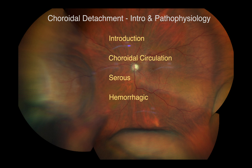Regarding hemorrhagic choroidal detachment, these usually happen secondary to serous choroidal detachment induced from surgical hypotony. The hemorrhage appears by stress on either the short or long posterior ciliary artery during a serous detachment, and one of those vessels may rupture. This occurs because the length of the arterial connections between the choroid and the sclera are short.